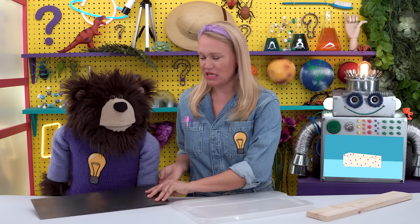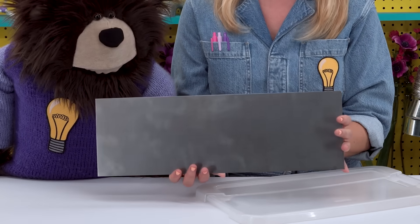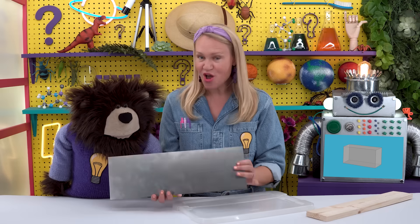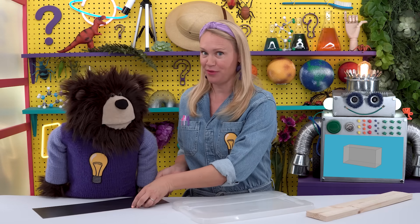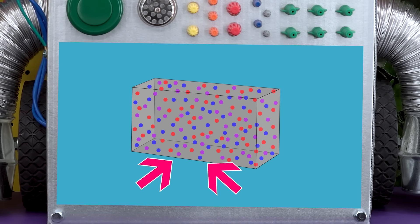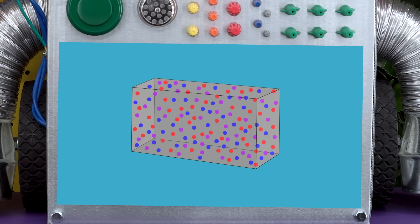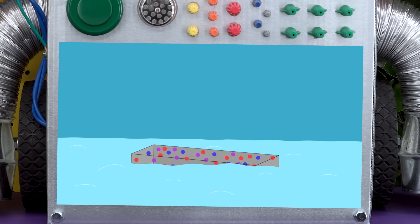Now, how about this piece of metal? Do you think the molecules are spread apart like the wood's molecules, or are the metal's molecules more tightly bonded together? The molecules of the metal piece are bonded tightly together, so that means this piece of metal has more density and is more likely to sink when placed in water.